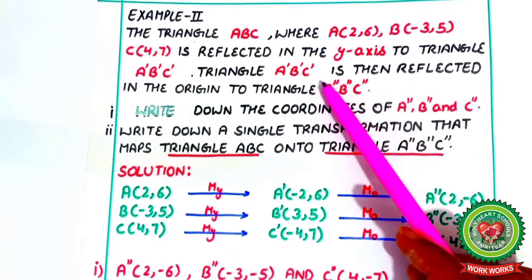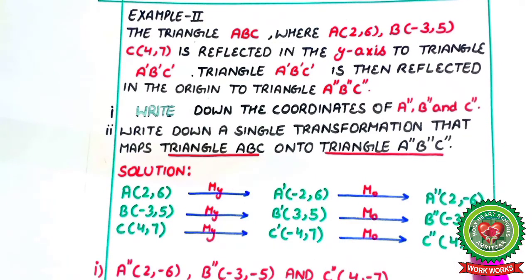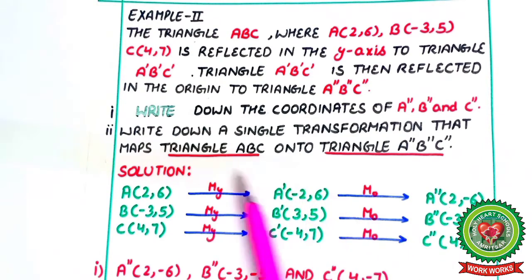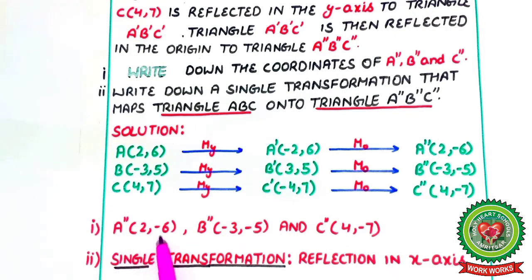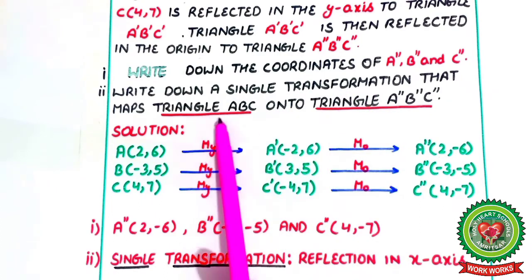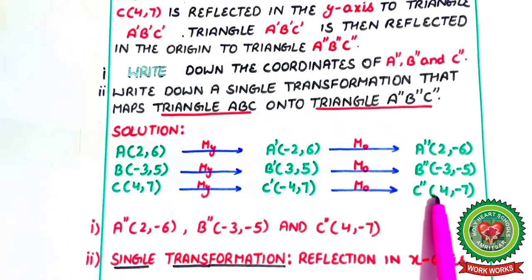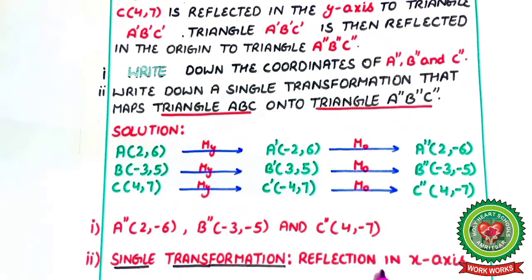Triangle A'B'C' is then reflected in the origin. Origin means sign of both abscissa and ordinate will change. So A'' is (2, -6), B'' is (-3, -5) and C'' is (4, -7). For the single transformation mapping triangle ABC onto triangle A''B''C'': y-axis and origin reflections are done, so left out is only reflection in x-axis. Single transformation is reflection in x-axis.